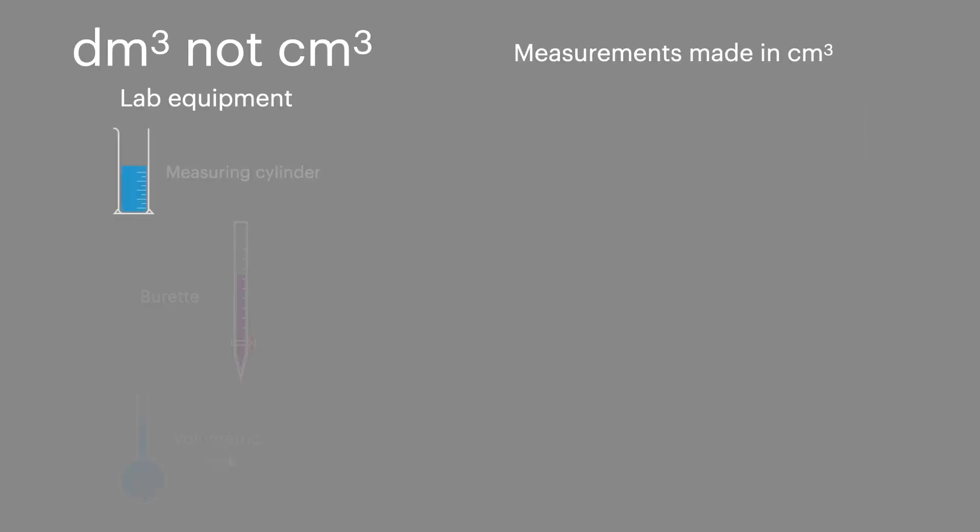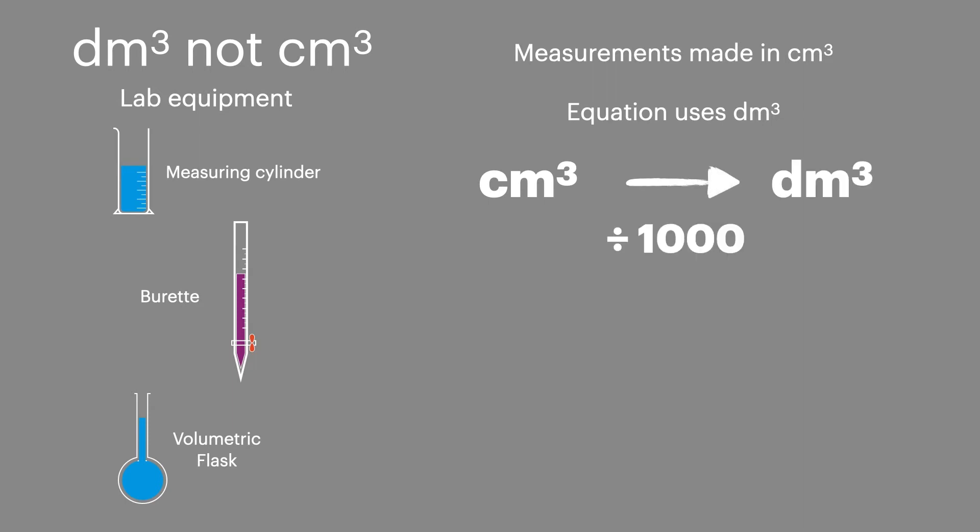When it comes to measuring liquids in the lab, we always measure in centimetres cubed. But in our equation, we use the volume in decimetres cubed. So we need to convert from centimetres cubed to decimetres cubed, and to do this, we divide by 1000. Sometimes it's easier to write this into the equation, as the number of moles equals volume divided by 1000 times by concentration.